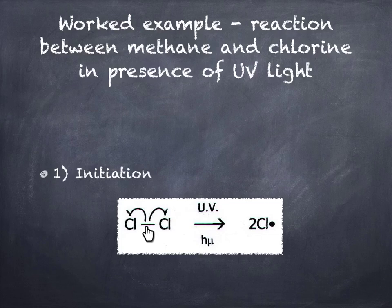So when this covalent bond breaks, one of the electrons goes to this chlorine, the other electron will go to this chlorine here, and we end up with two chlorine free radicals symbolized by this unpaired electron, which we can draw as a dot here.